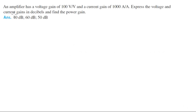Alright guys, let's do this problem. An amplifier has a voltage gain of 100 volts per volt and a current gain of 1000 amps per amp.